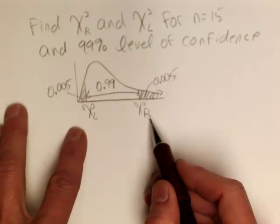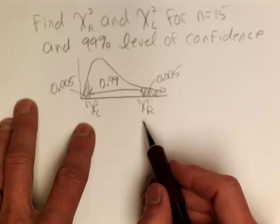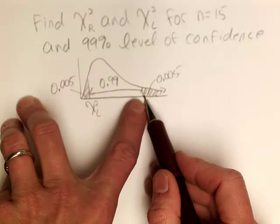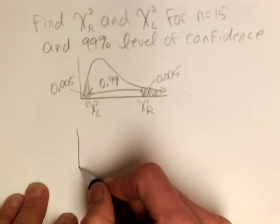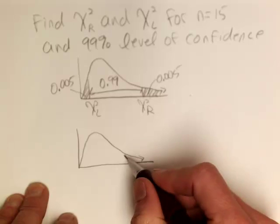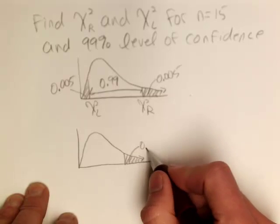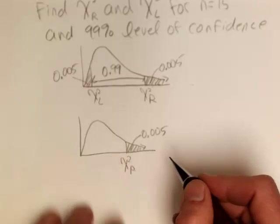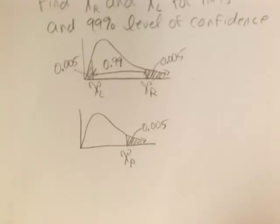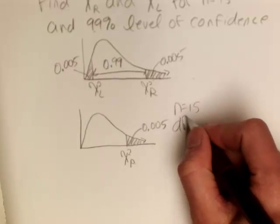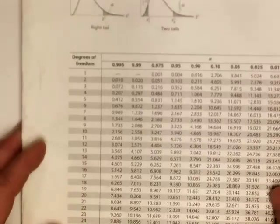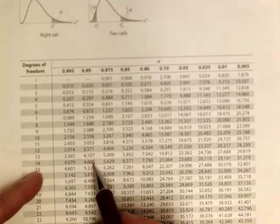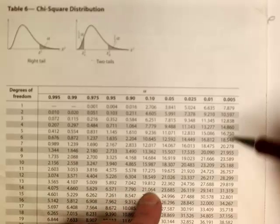So I'm going to have to go to the table twice. The chi-square table reads differently than the standard normal table — it reads from your critical value to positive infinity. To get the upper critical value, I'm reading correctly because I have the area shaded from that critical value to positive infinity. If n equals 15, my degrees of freedom will be 14, so I go down to 14 degrees of freedom and over to an area of .005 to the right.